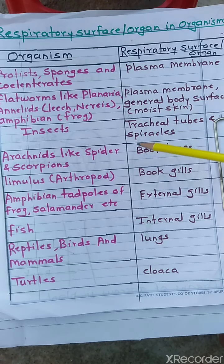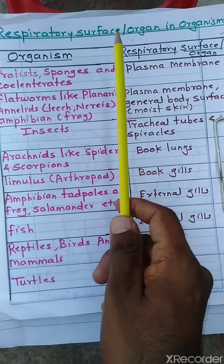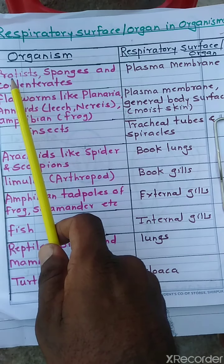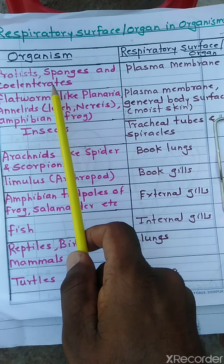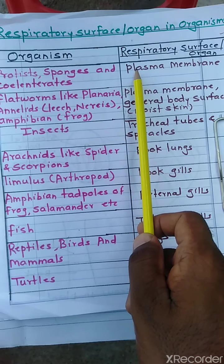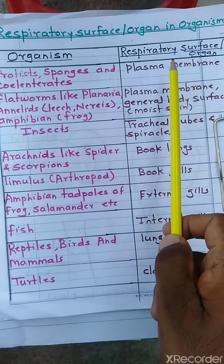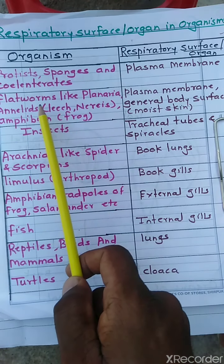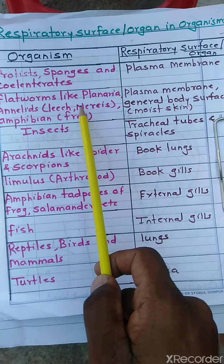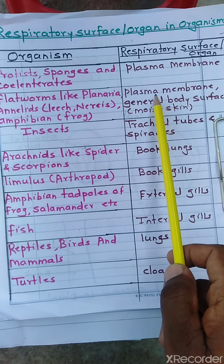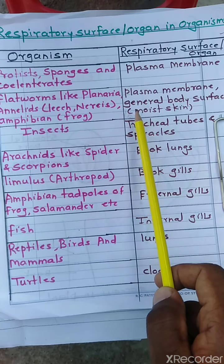In front of you, you can see a table showing organisms and their respiratory surfaces. First: protists, sponges, and cnidarians are non-chordate animals. In these, gas exchange takes place with the help of the plasma membrane. Second: flatworms like Planaria, annelids like earthworm, leech, and Nereis, and amphibians like frog — gas exchange takes place through the plasma membrane and general body surface.